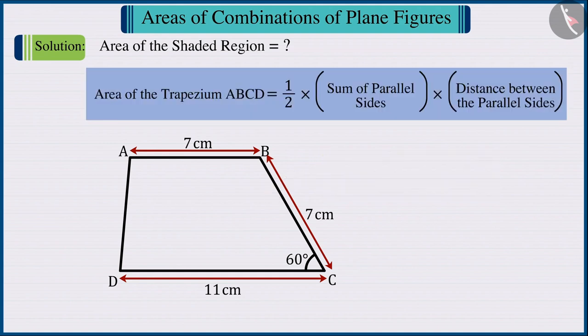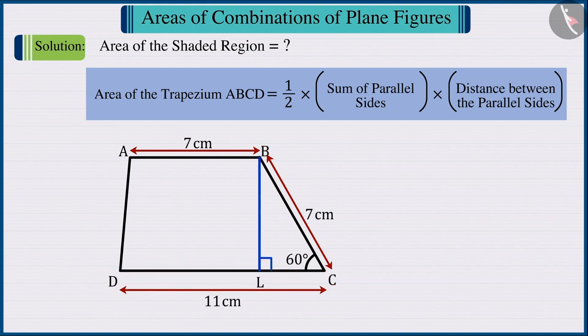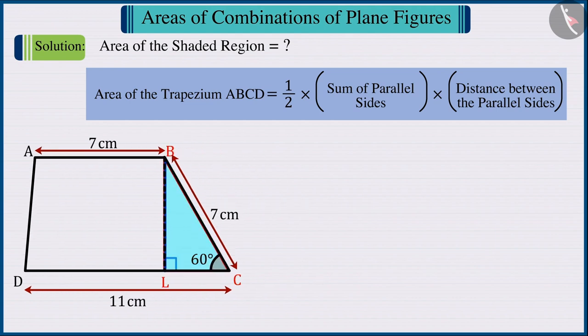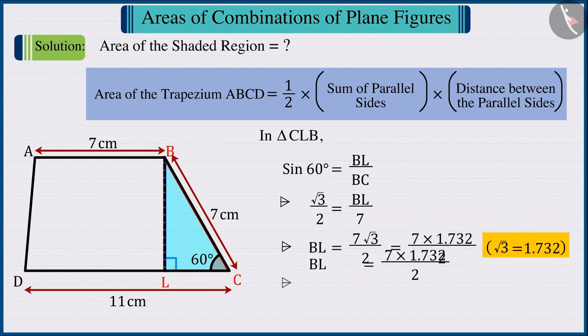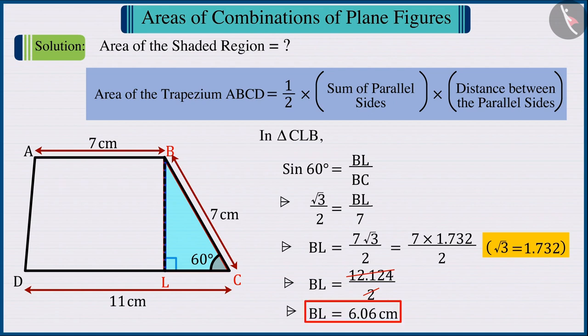From the formula for the area of a trapezium, we can see that we need the height of the trapezium. For this, we draw the perpendicular BL from point B on the side CD. Now, we get a triangle CLB where the angle at point C is 60 degrees. Hence, the height of the triangle CLB and the trapezium, that is, the measure of BL, is obtained as 6.06 cm.